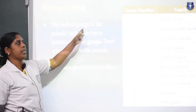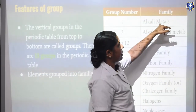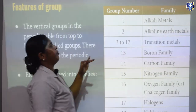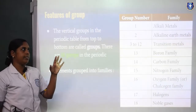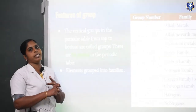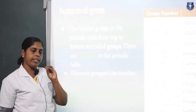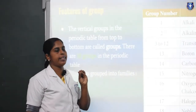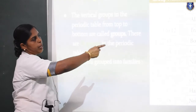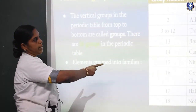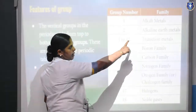The first group elements are known as alkali metals. Why? Because elements like sodium and potassium form alkalis — when exposed to water, there is an explosion. They possess similar properties. So the first group elements are known as alkali metals.